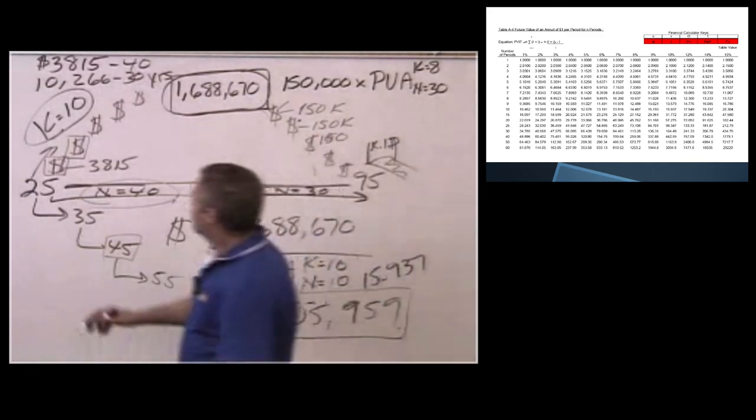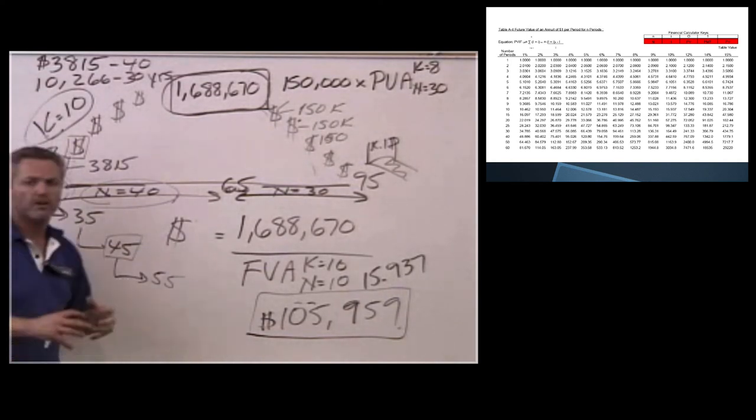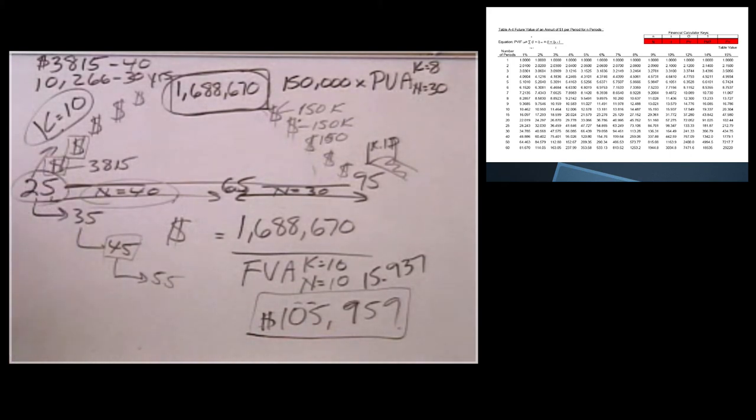When you start early, like say you're 25 and you get your first big job at 25 or 30 and you're going to make $50,000 or $60,000 a year, five, six percent, eight percent at $3,800 looks very doable, extremely doable. The most important dollar you'll ever save in your life is your first dollar. You actually got to get started at saving. And when you start early, you end up with a tailwind behind you that just makes everything work very smoothly and very easily.